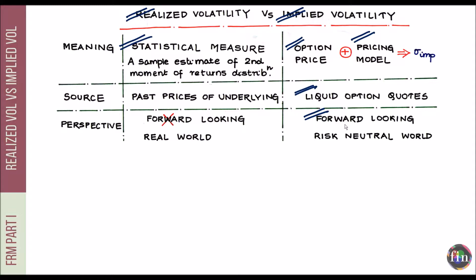If you are familiar with probability measures — the real world versus the risk neutral world used in valuation and risk management — realized volatility assumes we are operating in the real world. Since implied volatility comes from a model, such as Black-Scholes, which assumes a risk neutral world, the implied volatility that comes out of such a model should be treated as a risk neutral number.